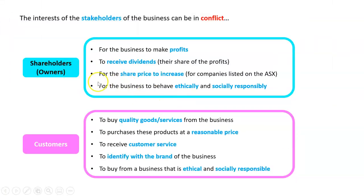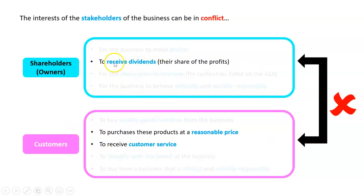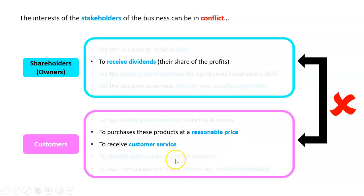Let's keep shareholders but put in customers. We could see a conflict between shareholders having a desire to receive high profits, which they get in the form of dividends, whereas customers want to purchase at a reasonable price and receive a lot of customer service. Say a business lowered its prices by 20% and hired an extra hundred customer service people to work in stores — customers would love that, prices going down and more service. However, the shareholders would not like that because that's going to lower profits by a lot.